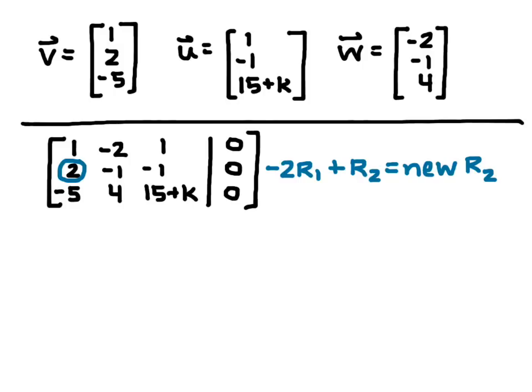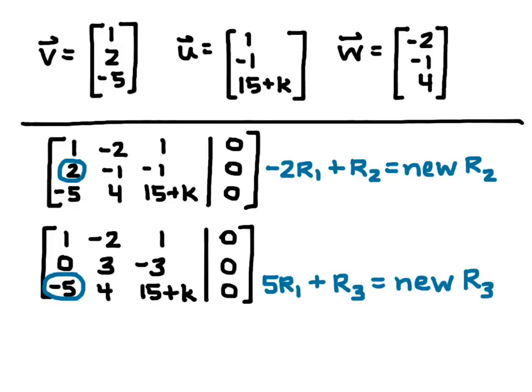Okay, so you've done the calculation, and you get the matrix with second row being 0, 3, negative 3, 0.